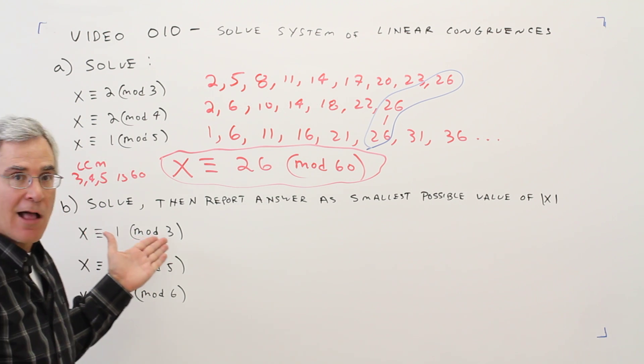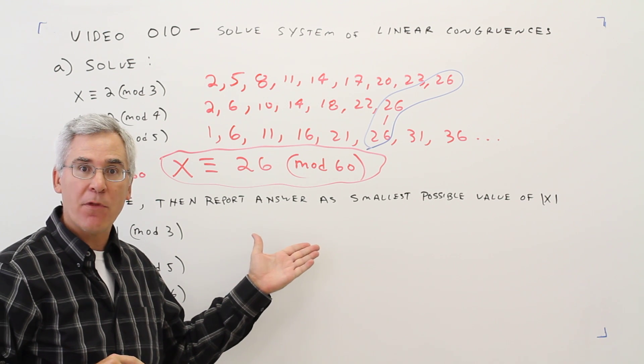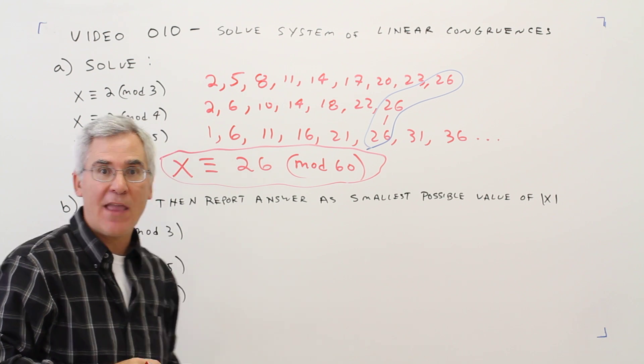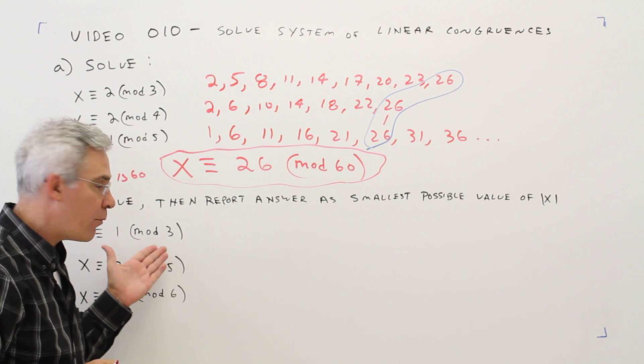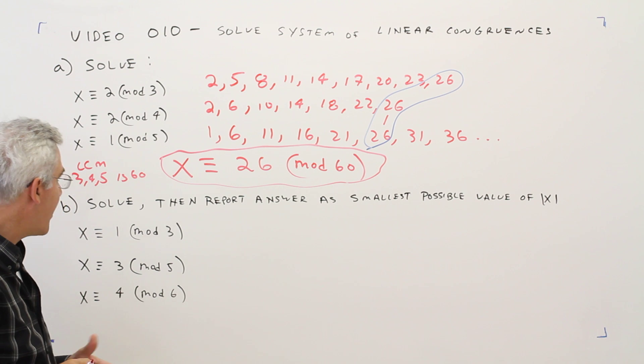Second problem. Solve, then report the answer as the smallest possible value of the absolute value of x. So I don't want the answer in mod form, just the smallest value of the absolute value of x. I've got x is congruent to 1 mod 3, x is congruent to 3 mod 5, x is congruent to 4 mod 6.